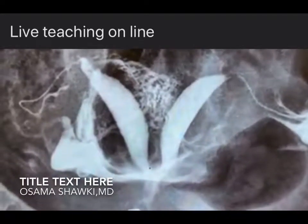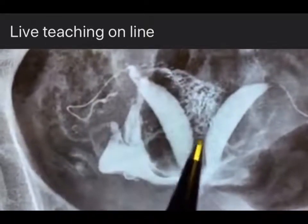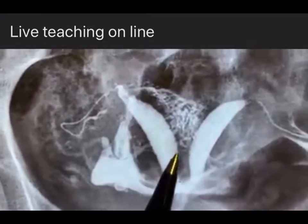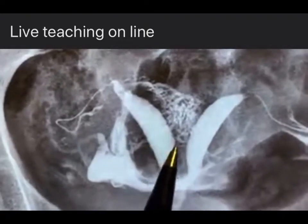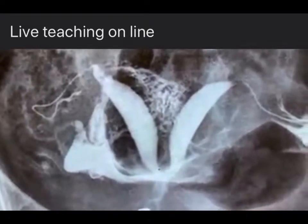Hysterosalpingography is confusing to many people to distinguish between a bicornuate uterus or a uterine septum. Just check this angle between both cornua. This is the angle. If this angle is less than 90 degrees, that's 100% septum.